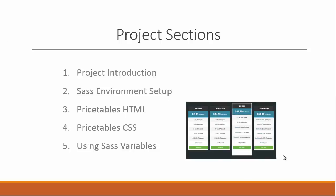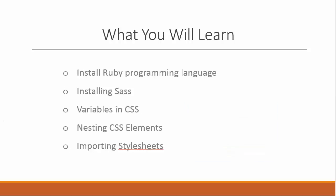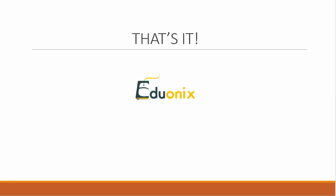On the right you can see a thumbnail of the project — basically four pricing tables with different features and costs, and one that sticks out as a featured or most popular package. What you'll learn: installing the Ruby programming language, installing and working with SASS variables, nesting CSS elements, and importing stylesheets so you can connect multiple SASS files and generate one CSS file from them. All right, let's get started and I'll see you in the next video.